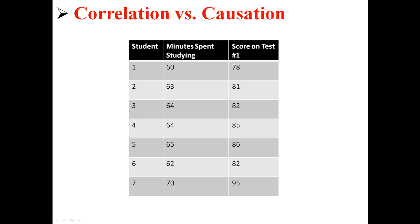Maybe some people did better just because they're naturally better at math. There are hundreds of different reasons why they might have done better. We can't isolate just minutes spent studying, so there's no way for us to imply that the time spent studying causes better scores. We can only say that they're related because we did not perform a true experiment.